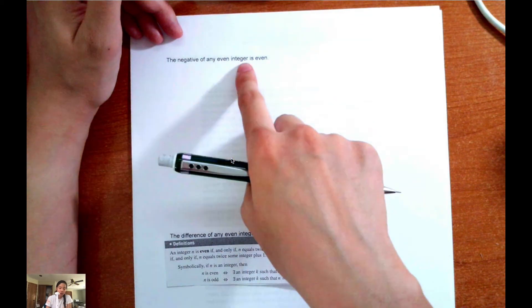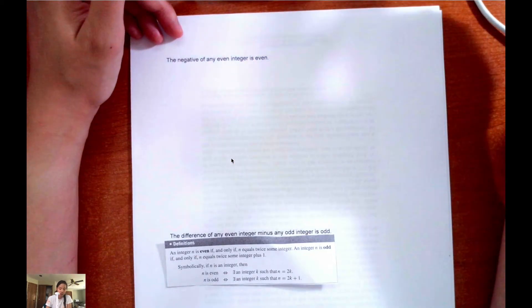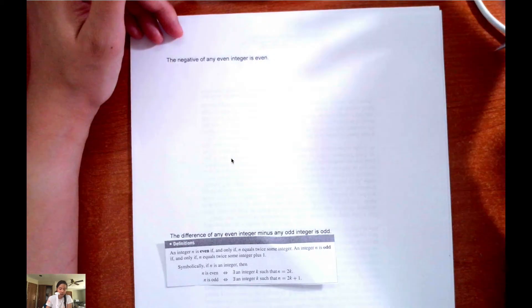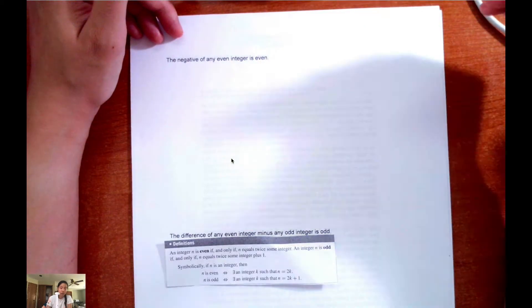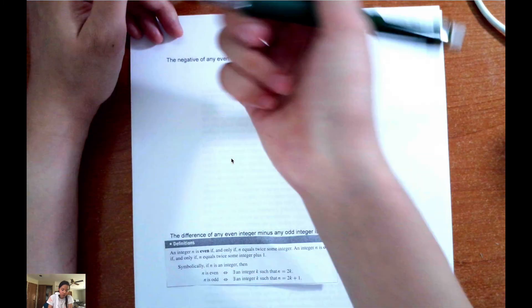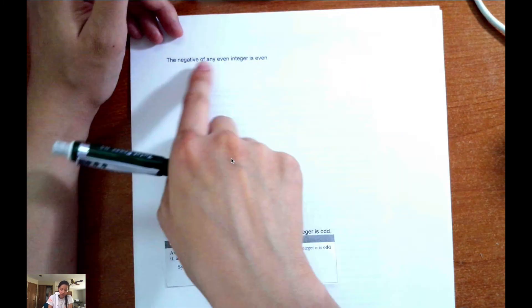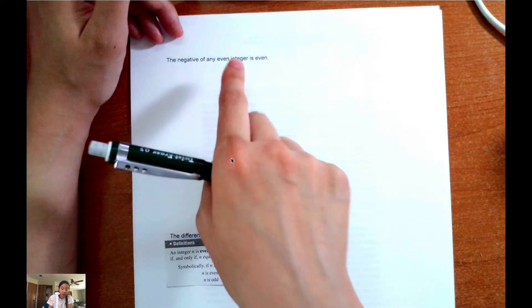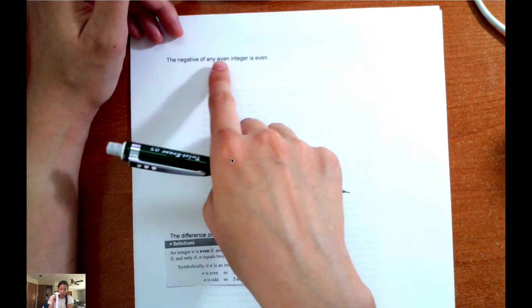The first thing you want to do when you are writing a direct proof, which is what we're doing in this case, is you want to write the sentence in if-then format. So we would have one variable, since it's talking about any even integer is even, so it's just one variable.